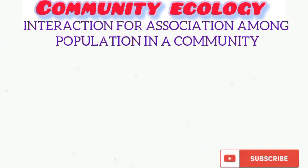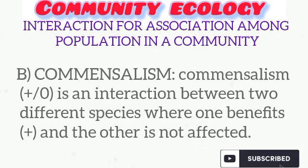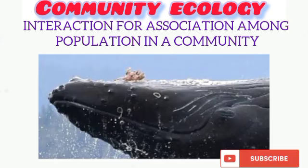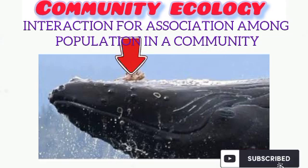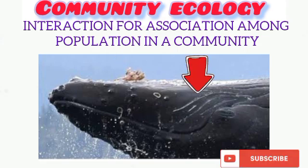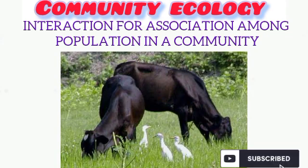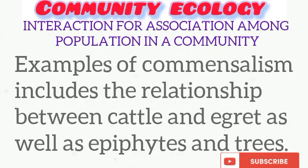Commensalism is a kind of symbiotic association between two species where one actually benefits and the other is unaffected. An example is the relationship between barnacles and whales: the barnacle attaches to the whale, getting shelter, protection, and a free ride, while the whale is biologically unaffected. Other examples include the relationship between cattle and egrets, and between trees and birds that build nests on them.